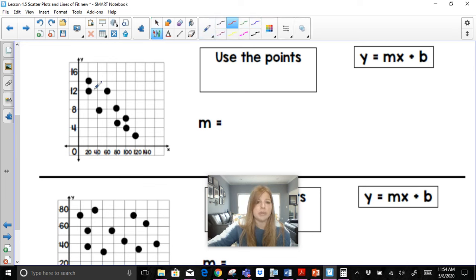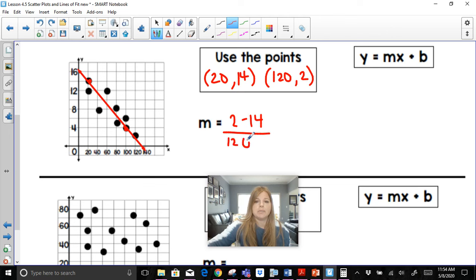If I was to take two points, two ordered pairs, let's say this ordered pair and this one that I see are basically through the middle of this graph and write the equation of that line. That would be called the line of best fit. So the points I chose were 2014 and 122. So now if I want to calculate my slope, it would be 2 minus 14 over 120 minus 20, which becomes negative 12 over 100, which is just negative 0.12.